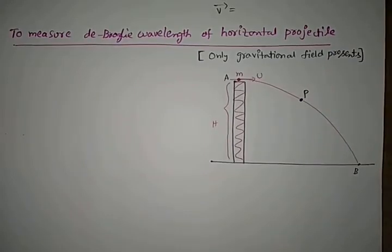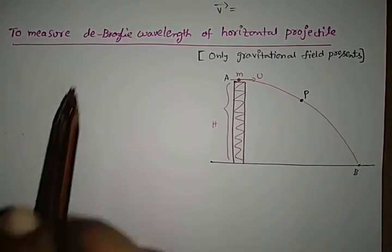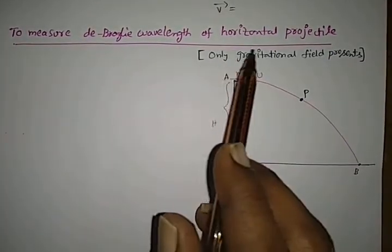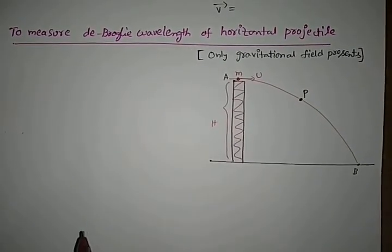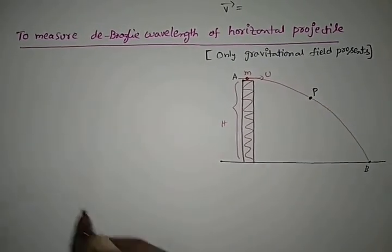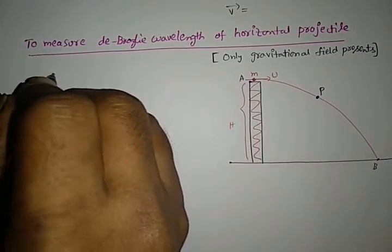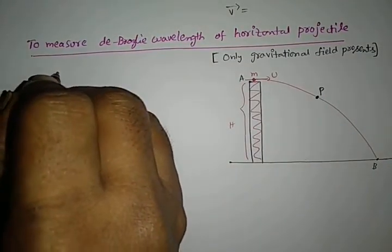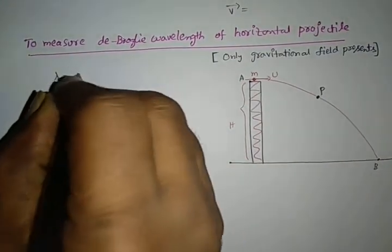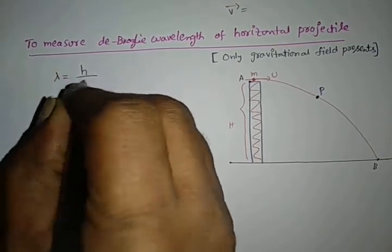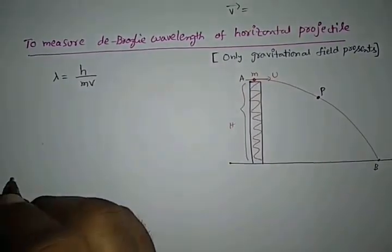Dear students, our next topic is to measure de Broglie wavelength of a horizontal projectile. The general expression for de Broglie wavelength of a body moving with velocity v is given by lambda equals h by m v.